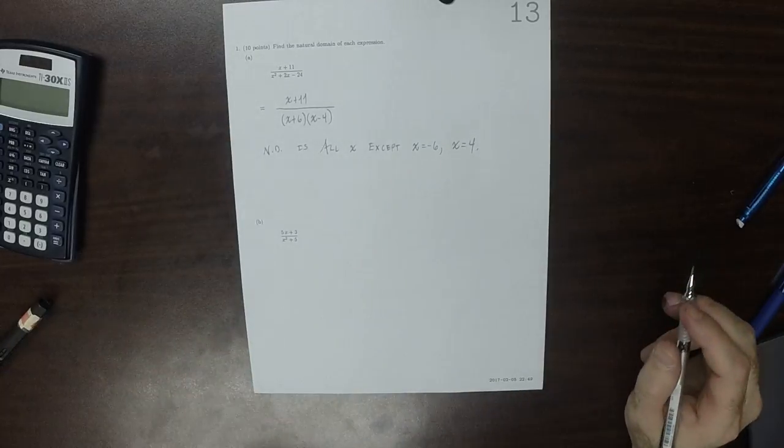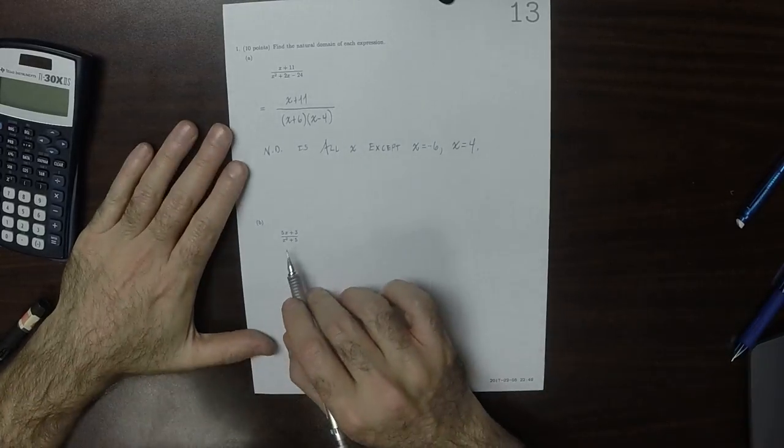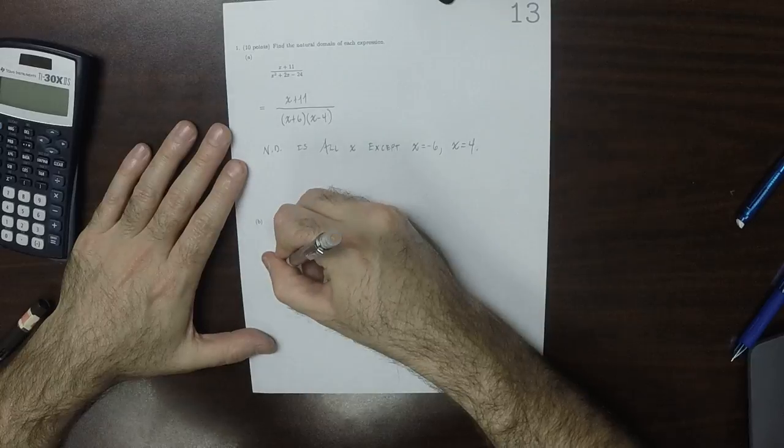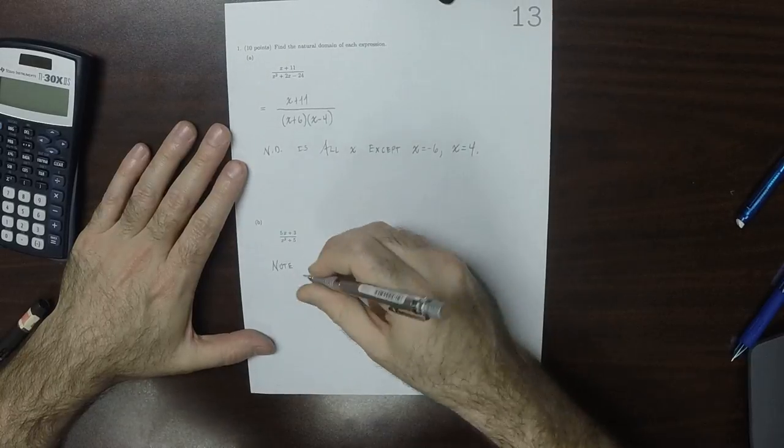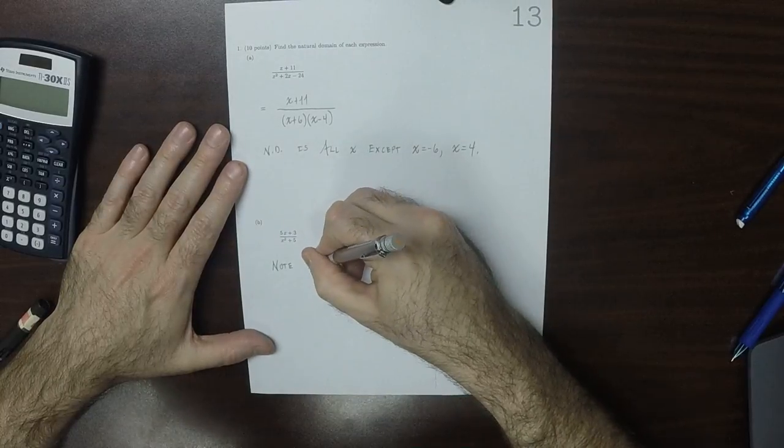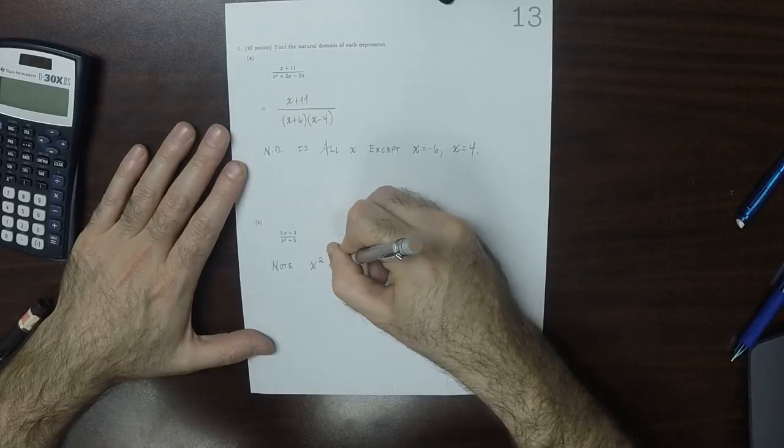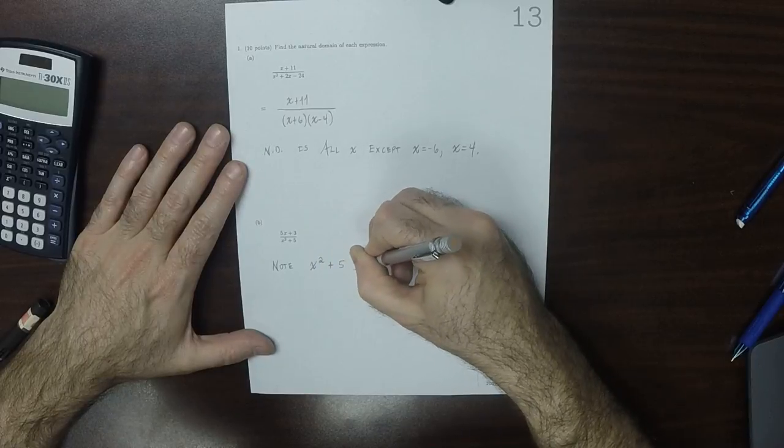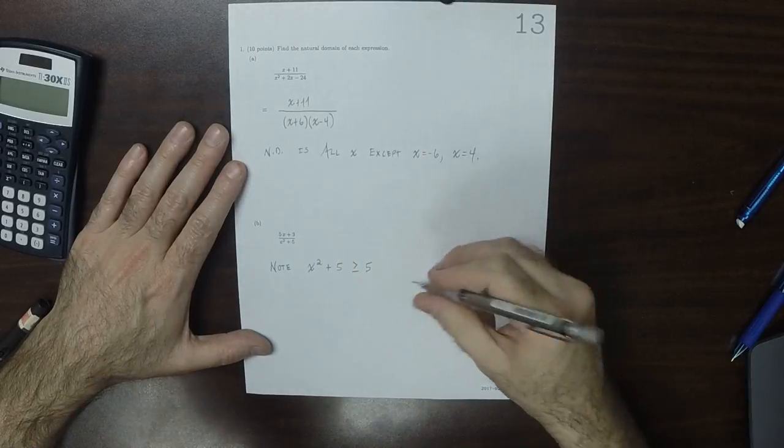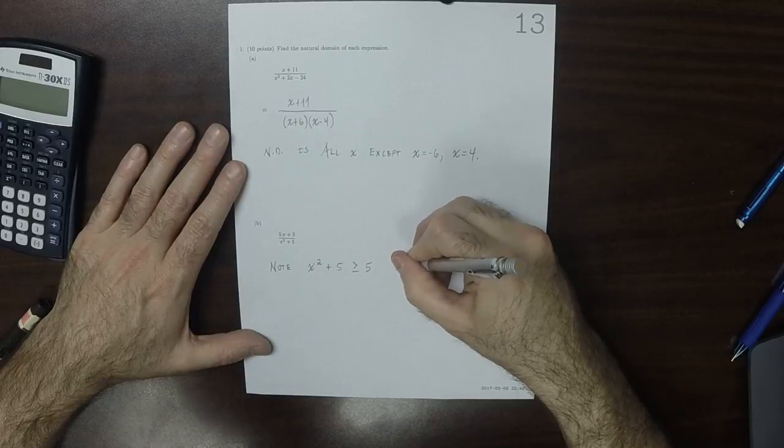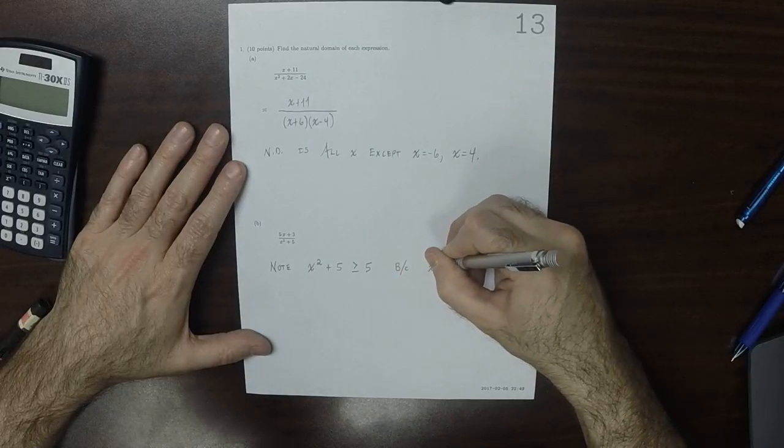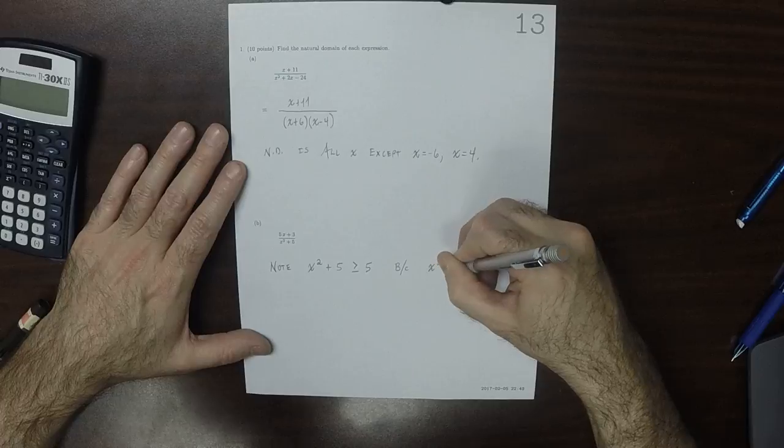Now, this one, again, we have a division. But note that x squared plus 5 is greater or equal to 5, because x squared is greater than or equal to 0.